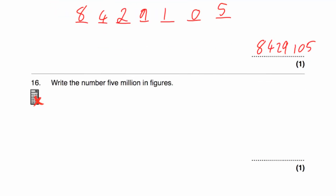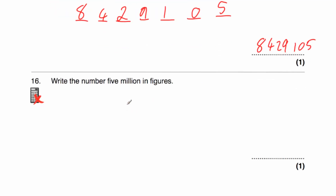Question number 16 says write the number 5 million in figures. So 5 million is a 5 followed by 6 zeros — so that's 5,000,000. Let's just check our place value columns: units, tens, hundreds, thousands, tens of thousands, hundreds of thousands, and millions. So that's it.